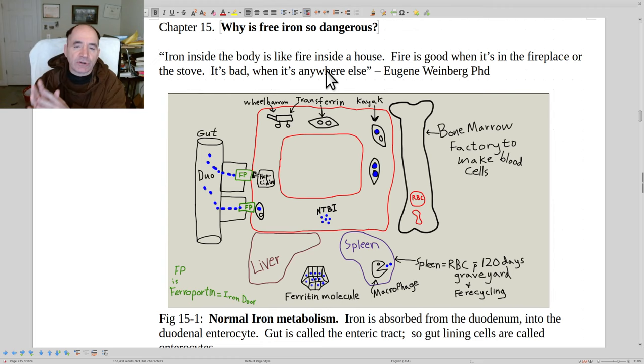The reason why iron is so common in the human body is because by being able to have a variable valence, it can hand off electrons in the middle of enzyme active sites.